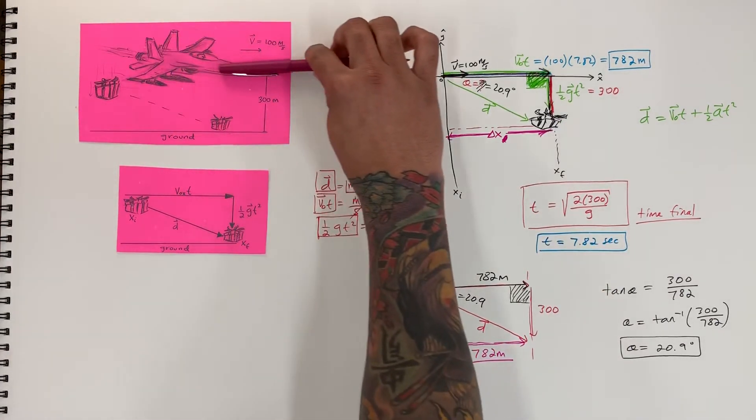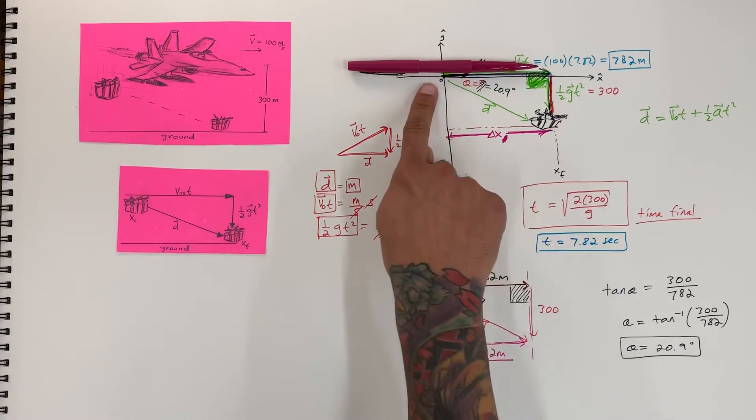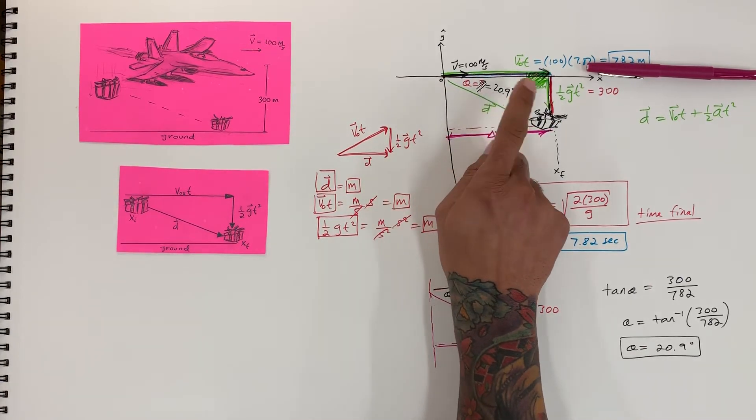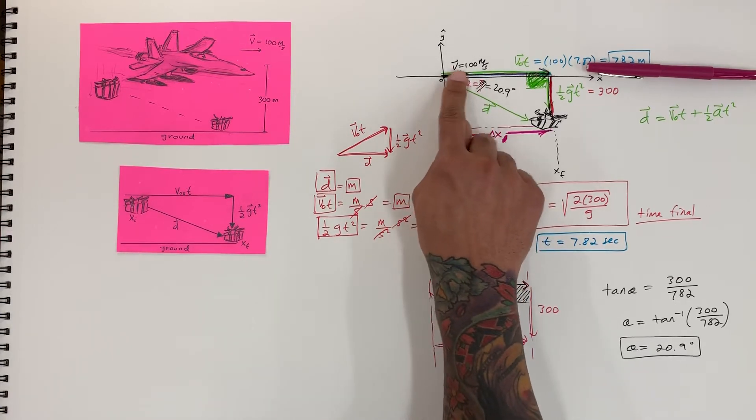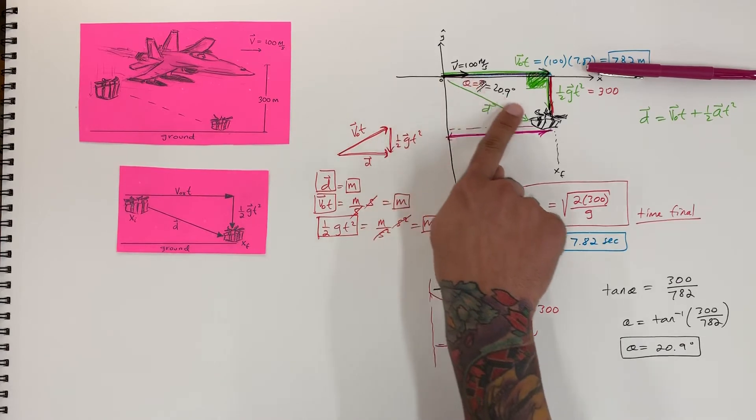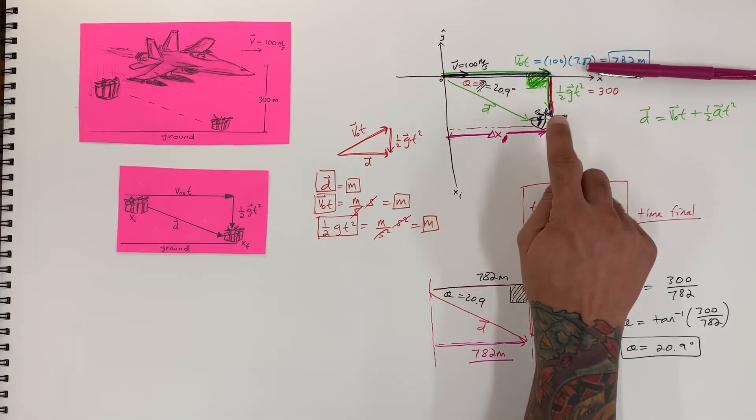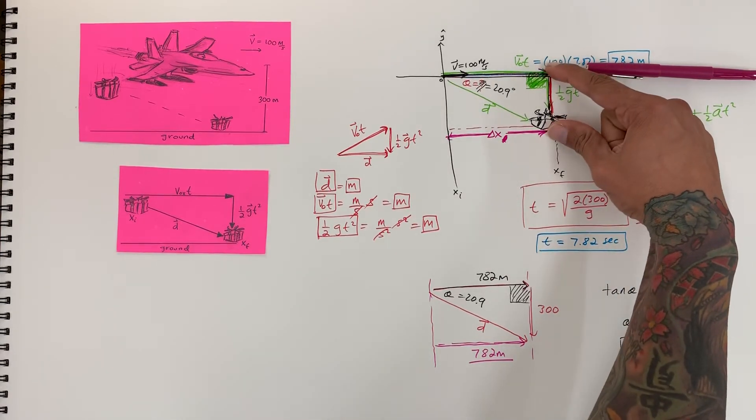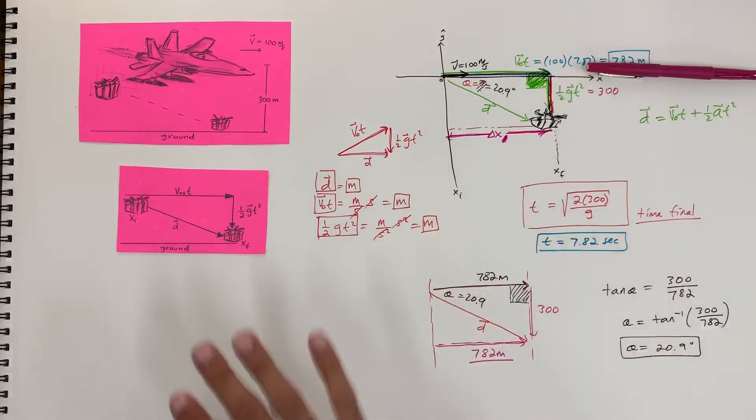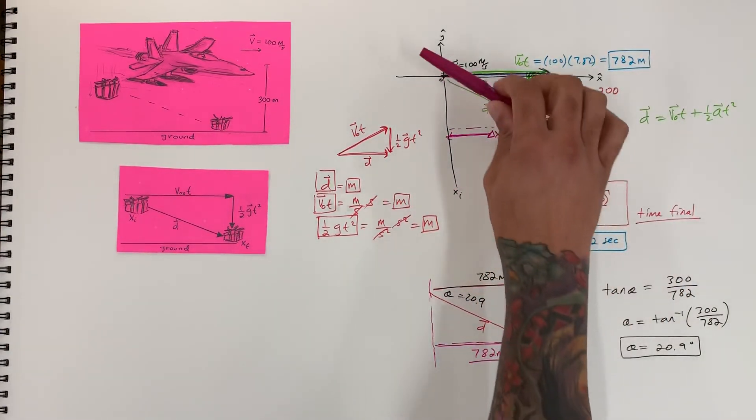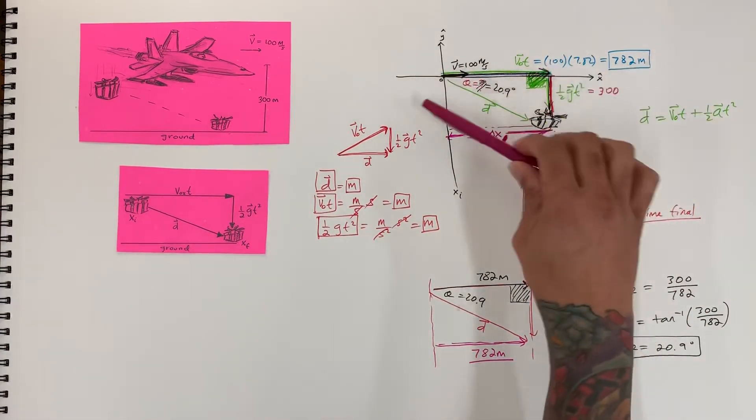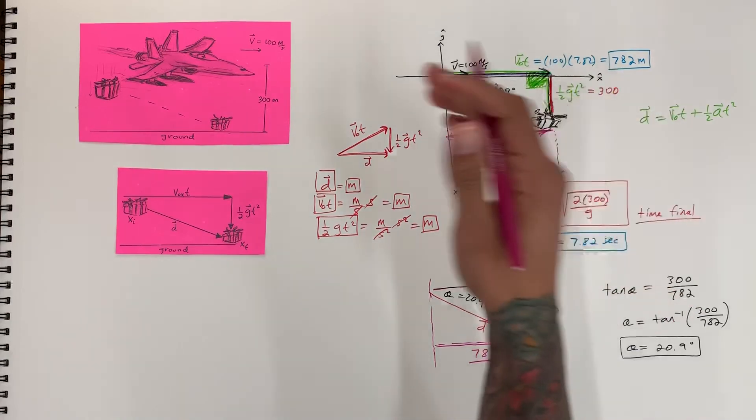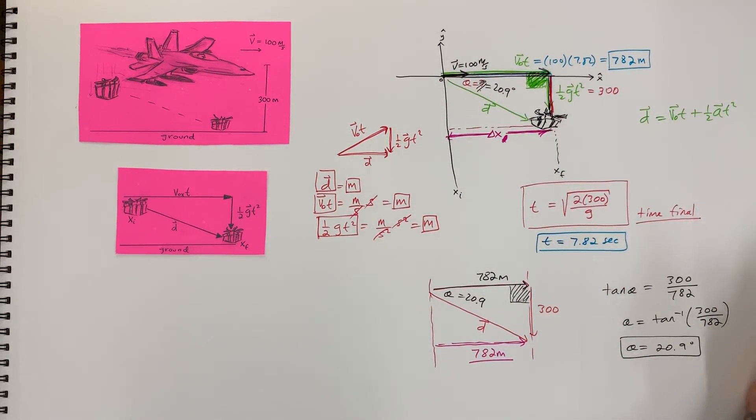so the plane came in at 100 miles an hour and right around there dropped the package off kept flying and so the package fell at 20 degrees or 20.9 degrees and it had an initial velocity of 100 miles per hour and we found where exactly it stopped at which is 782 meters it was dropped from 300 meters above the ground okay so that's all the information that we needed to get from this I just wanted to show you how we can use the triangles in any direction really so you gotta you know try to be creative and try to see the problem draw it out so that way you can draw your triangles right and get it done quick and clean alright